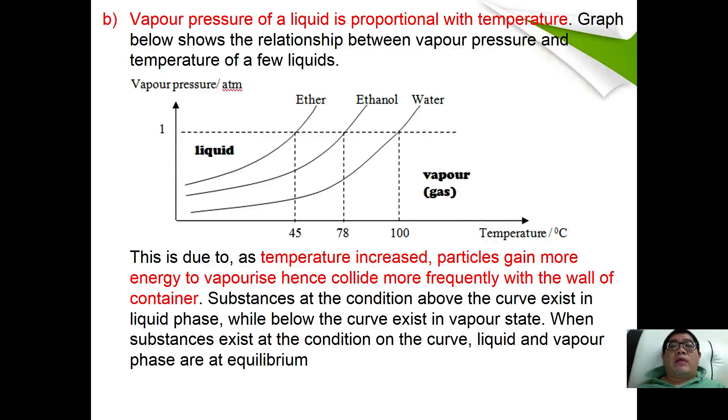Vapor pressure of a liquid is directly proportional to temperature. The graph below shows the relationship between vapor pressure and temperature of a few liquids: ether, ethanol, and water. As you can see from here, ether has the highest vapor pressure.